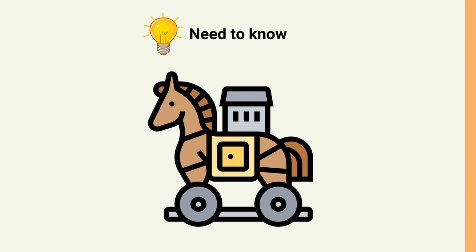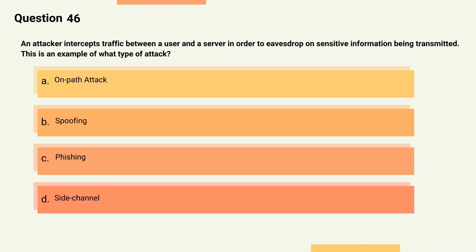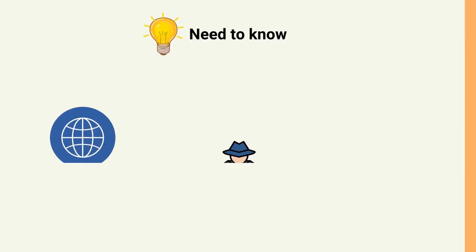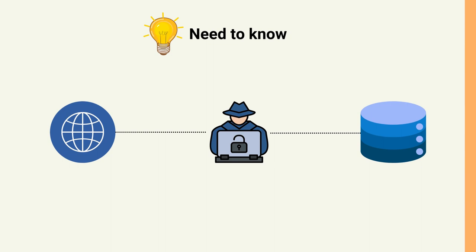Question 46: An attacker intercepts traffic between a user and a server in order to eavesdrop on sensitive information being transmitted. This is an example of what type of attack? Options: A) On-path attack, B) Spoofing, C) Phishing, D) Side channel. The correct answer is Option A, On-path attack. Explanation: The attacker is on the path between the user and the server, allowing them to intercept and view the traffic being transmitted.